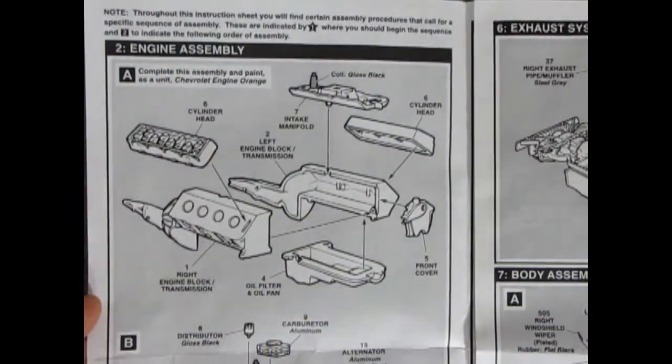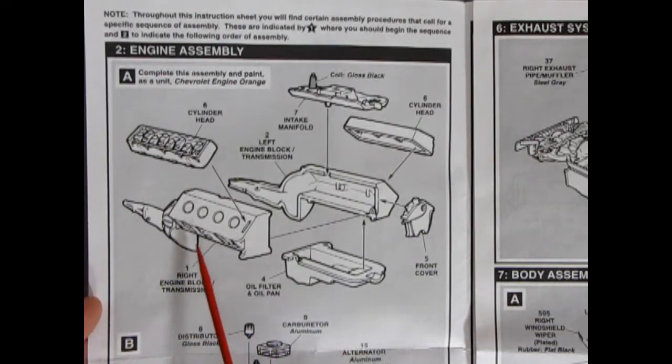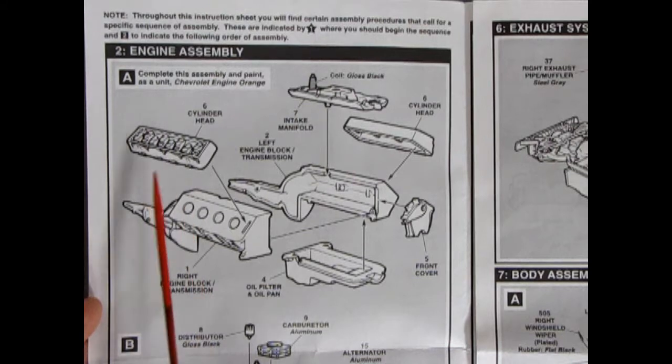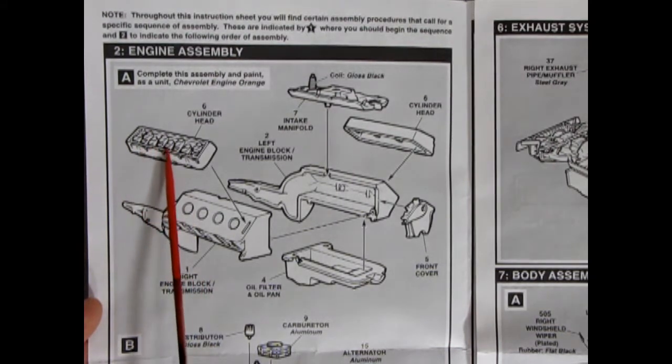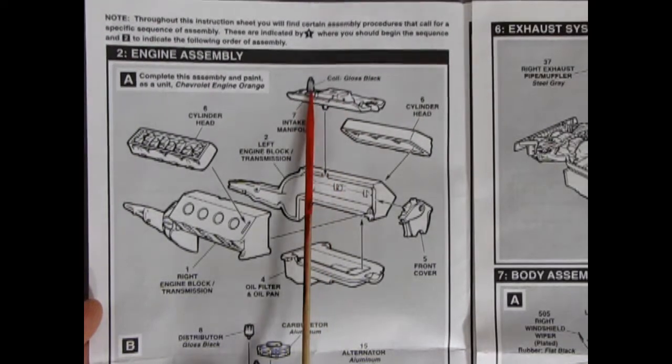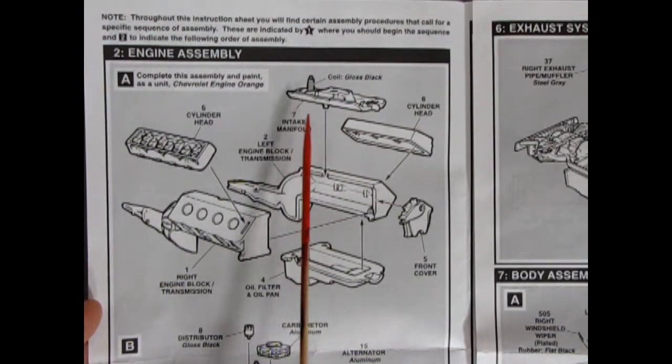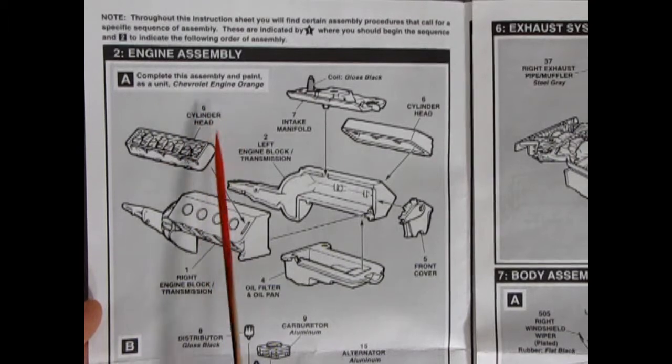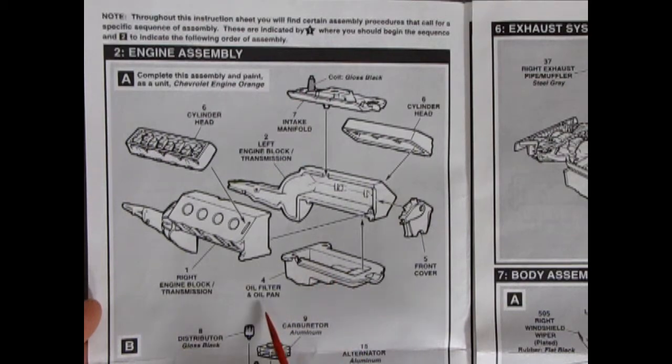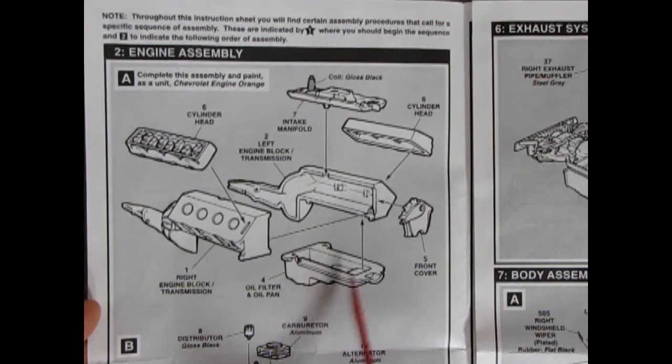Okay so here we have our engine. Again you've got your right and left engine block with the transmission molded on, cylinder head and it's nice it has the valve rockers on the top here. Then you've got your intake manifold with a coil molded on. It says to paint it all Chevrolet engine orange. Cylinder head front cover and your oil filler and filter and oil pan as one piece.